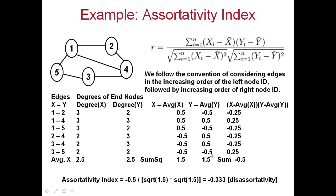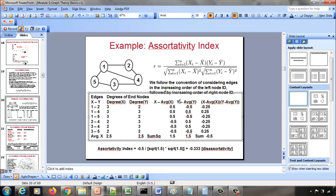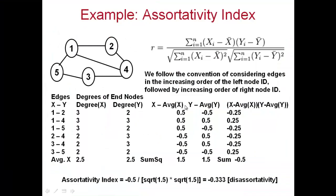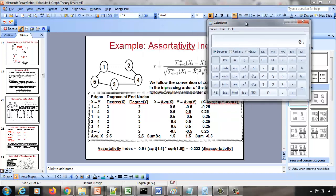Compute y minus average-y similarly: 2 minus 2.5 is negative 0.5, 3 minus 2.5 is 0.5, 2 minus 2.5 is negative 0.5, and so on. Then compute the squares of these differences and sum them. So 0.5 squared is 0.25, plus another 0.25, plus another 0.25, and each negative 0.5 squared is also 0.25. The sum of the squares of the differences is 1.5 for set X, and also 1.5 for set Y.